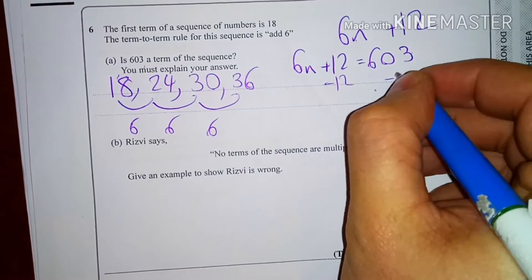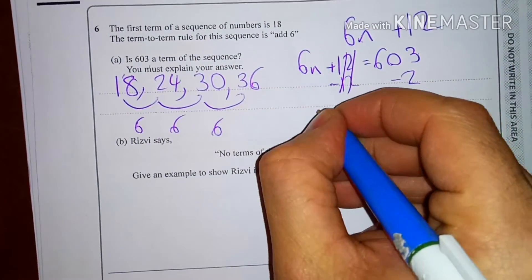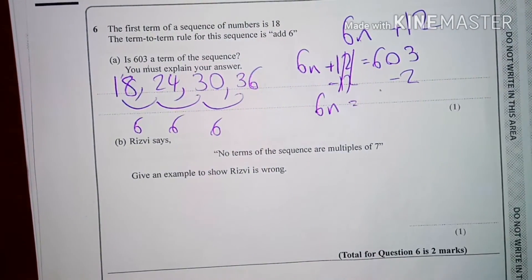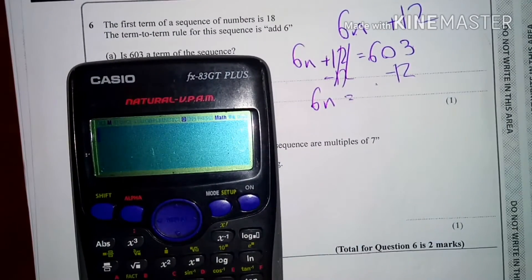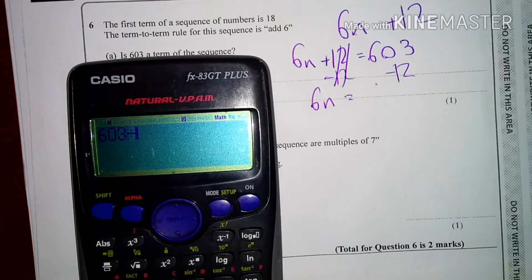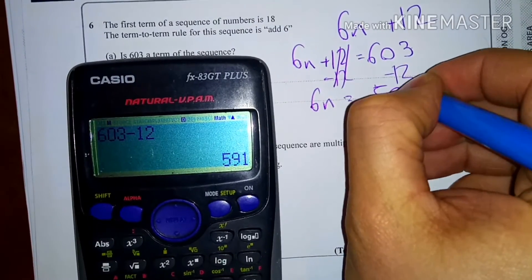To solve this, I'm minus 12 from both sides. So this cancels out. It means I've got 6n equals. Now, it's a calculator paper. So I'm going to use my calculator for this, just to be safe. 603 minus 12 equals 591.